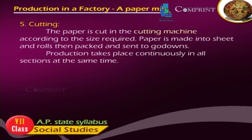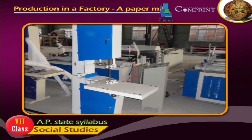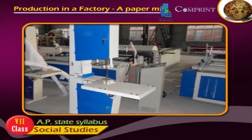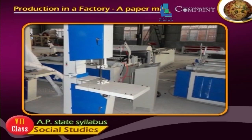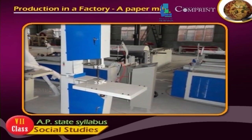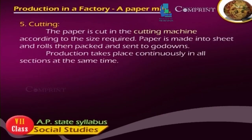Stage 5 — Cutting: The paper is cut in the cutting machine according to the size required. Paper is made into sheets and rolls, then packed and sent to godowns. Production takes place continuously in all sections at the same time.